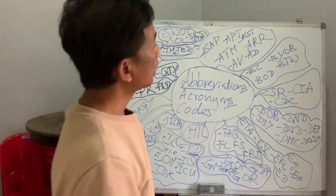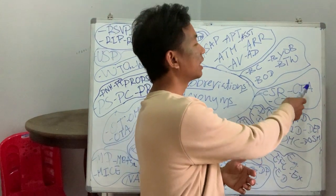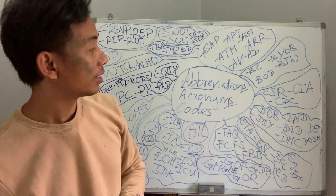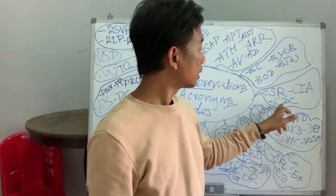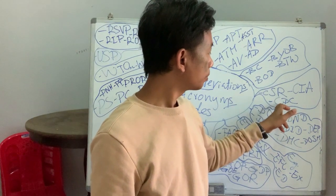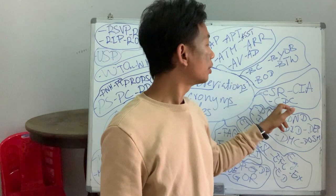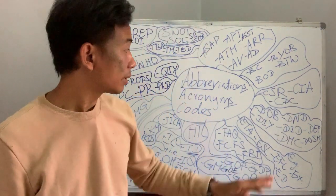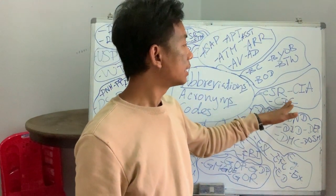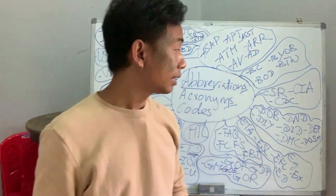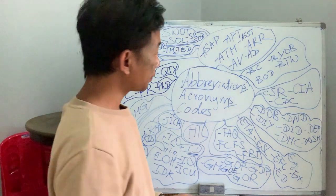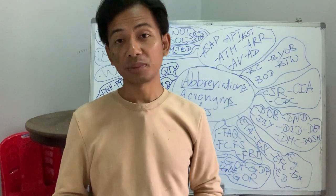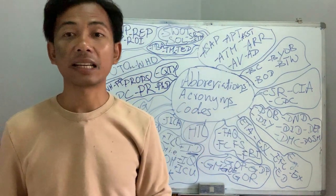CIA — Central Intelligence Agency, a very big organization. CDC — Center for Disease Control and Prevention. You hear this all the time, especially during COVID-19. CDC is very common in English.